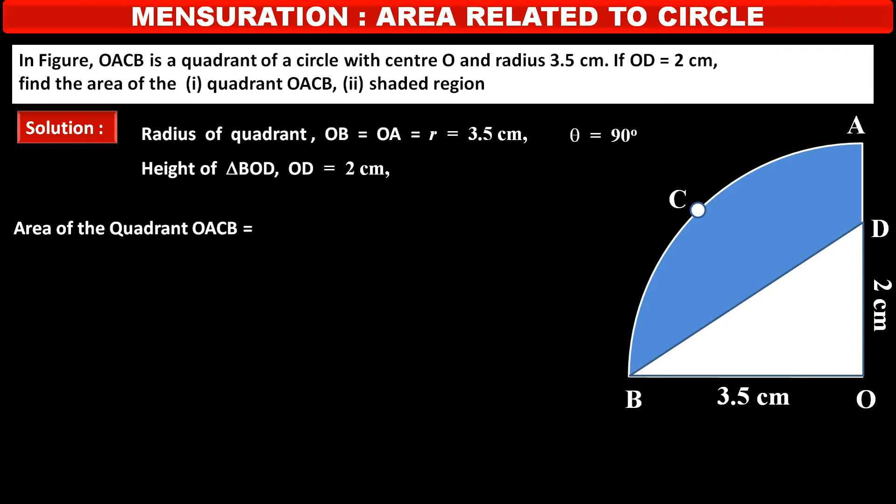Now, first we have to find area of the quadrant OACB. Quadrant is also a sector and we know the formula of area of sector. It is theta upon 360 into pi R square, which is equal to substituting the values of theta, pi and R we get.